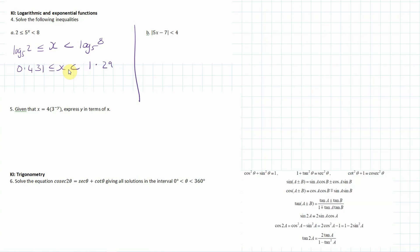This next one is kind of like a modulus problem involving 5 to the power of x. I'm going to square both sides, giving (5 to the x minus 7) squared less than 16. Expanding: 5 to the 2x minus 14 times 5 to the x plus 49 is less than 16. I'll substitute y equals 5 to the power of x, giving y squared minus 14y plus 49 less than 16.